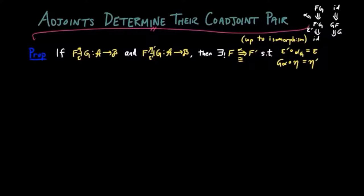To prove this, we use the universal mapping properties of the unit. For each object b, since eta b is the initial object in the category b over g, then given the unit of the second adjoint situation eta prime b, there exists a unique morphism alpha b from fb to f prime b. This gives us the definition of alpha on components b.